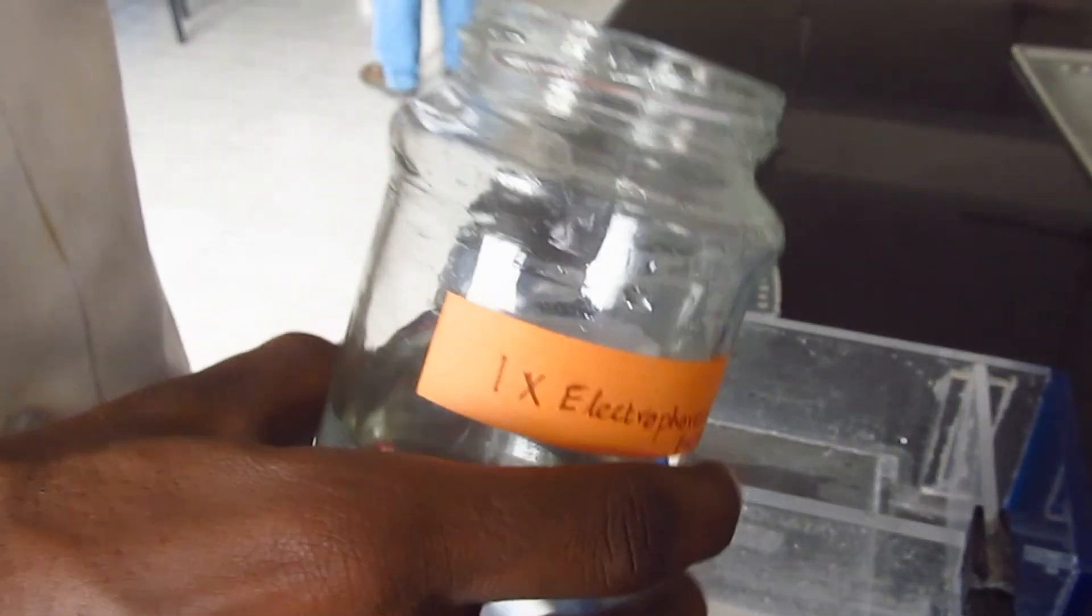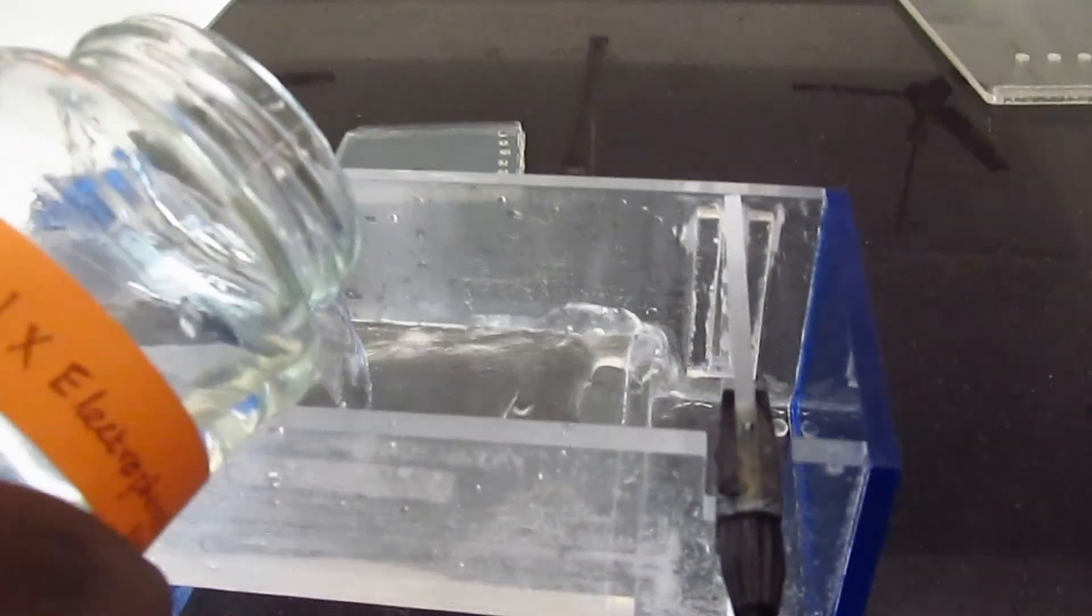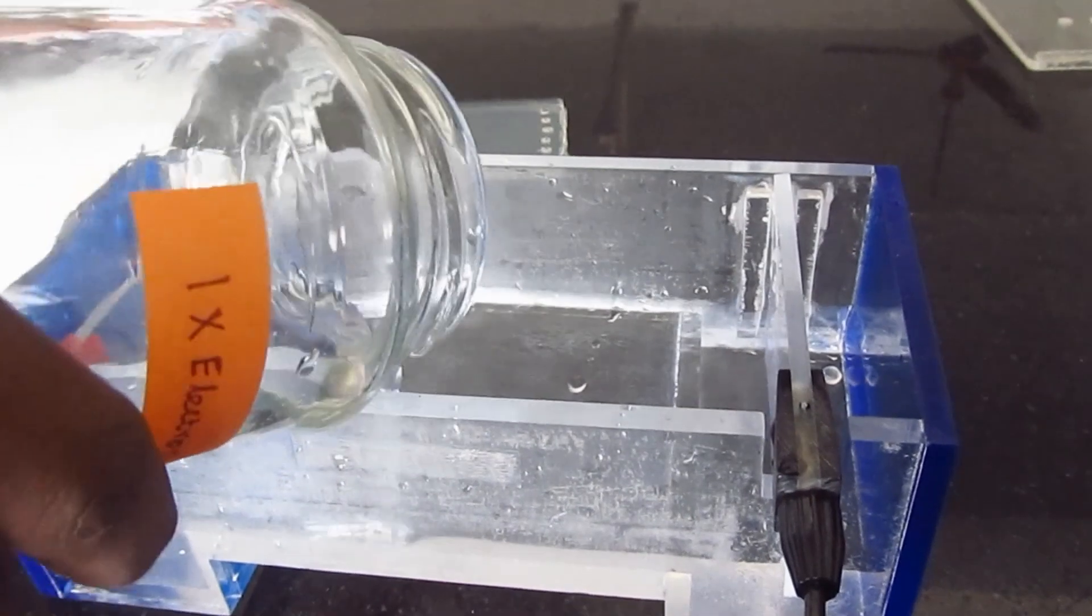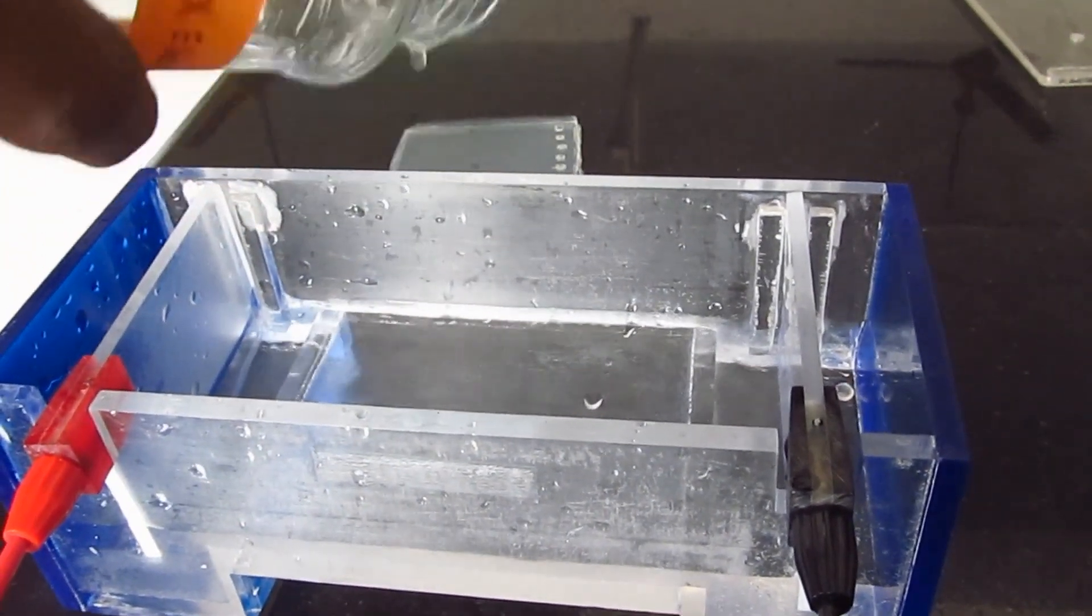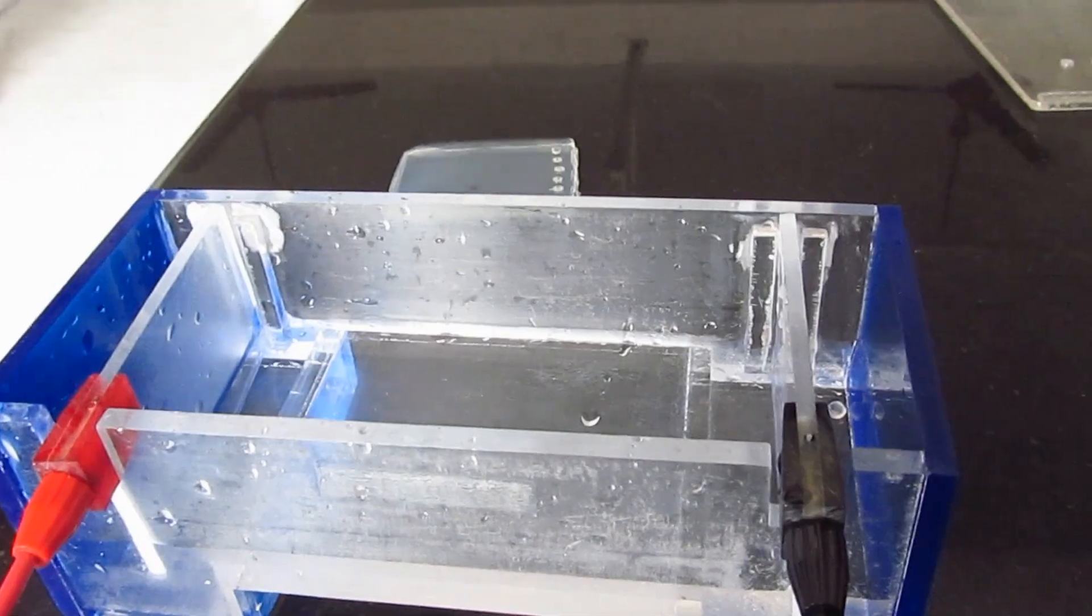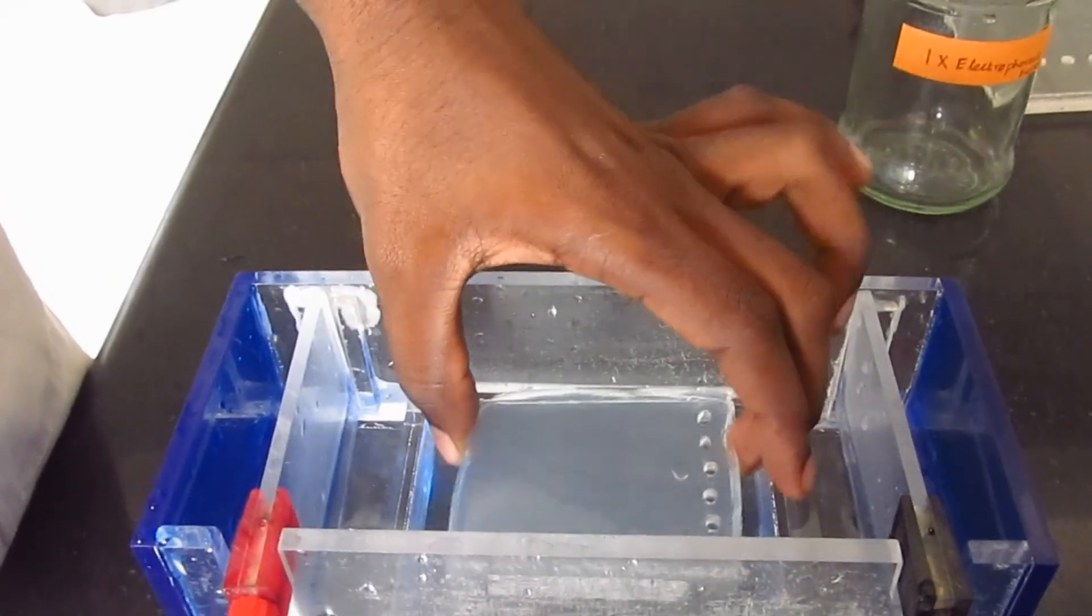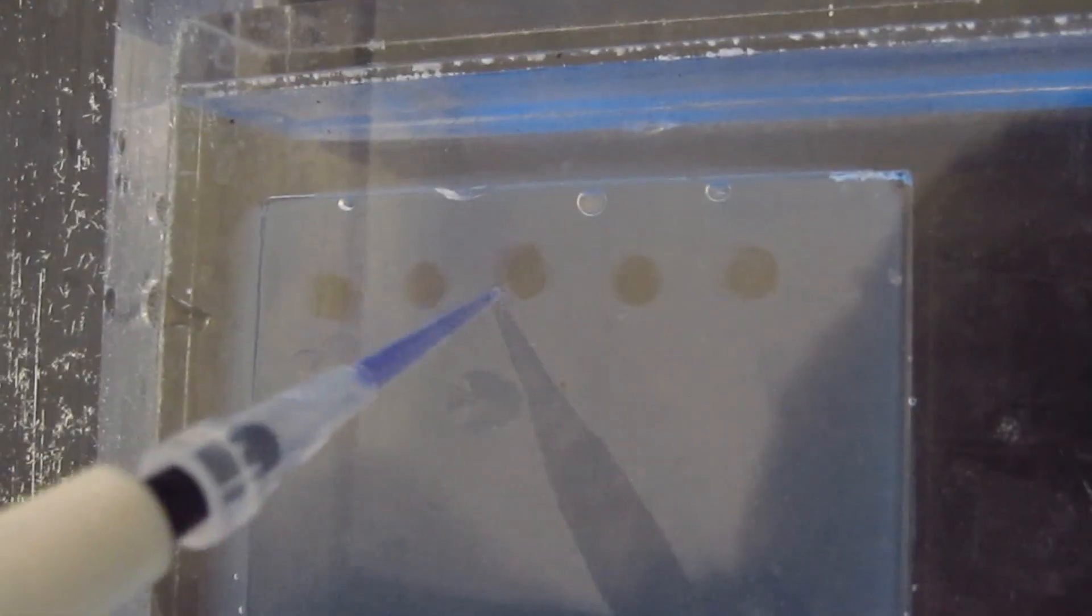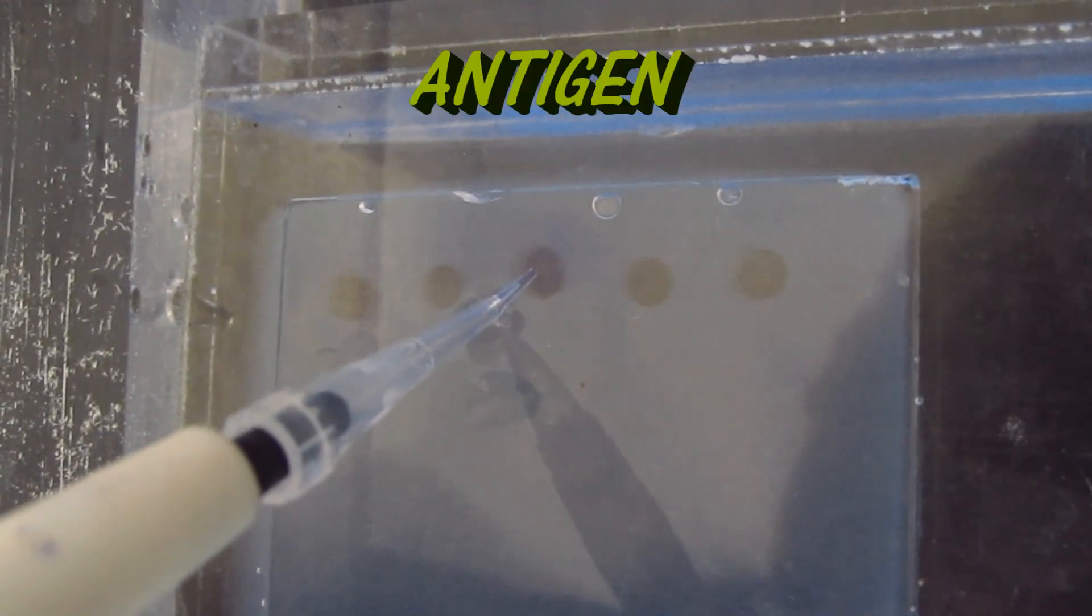Pour the 1x electrophoresis buffer into the gel tank. Immerse the gel into the buffer. Load the antigens into the wells.